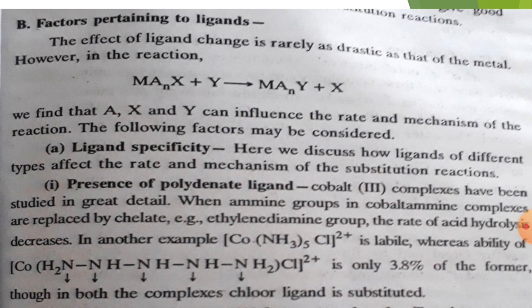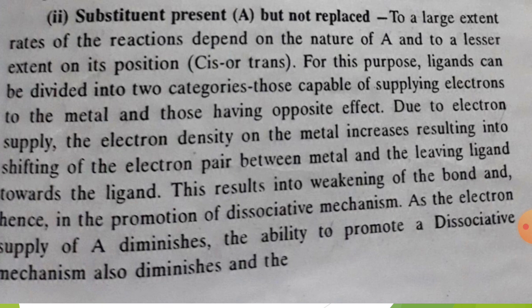Now we come to substituent present A, but not replaced. To a large extent, rates of reactions depend upon the nature of A and to a lesser extent on its position. For this purpose, ligands can be divided into two categories: those capable of supplying electrons to the metal, and those having the opposite effect.